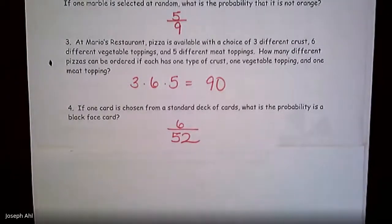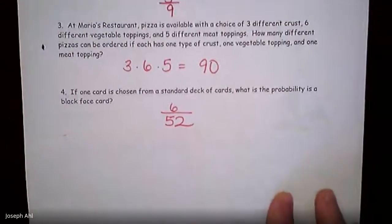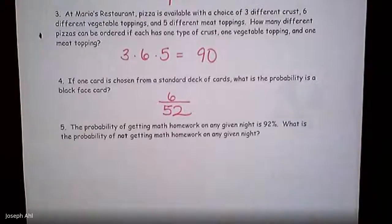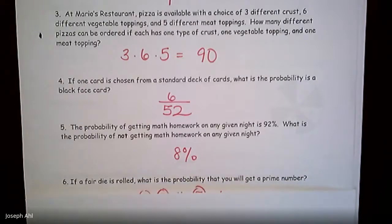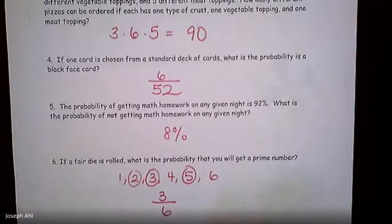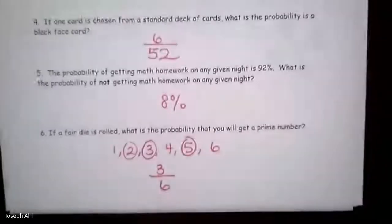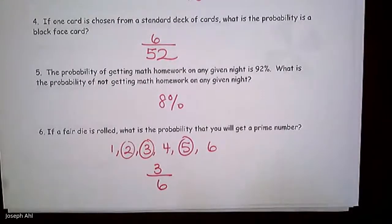The probability that you pick a black face card would be 6 out of 52 — there are two black jacks, two black queens, and two black kings. Use that reference sheet if you need to. If the probability of getting math homework on any night is 92%, then the probability that you will not get math homework is 8%. The probability that you get a prime number when you roll a die is 3 out of 6, since the prime numbers on a die are 2, 3, and 5.